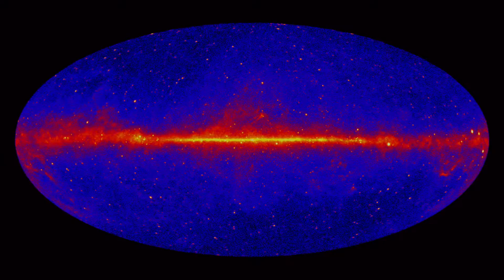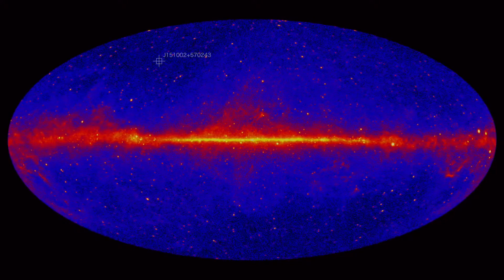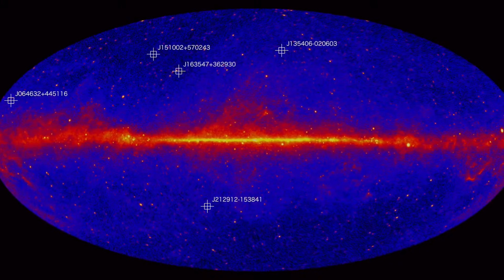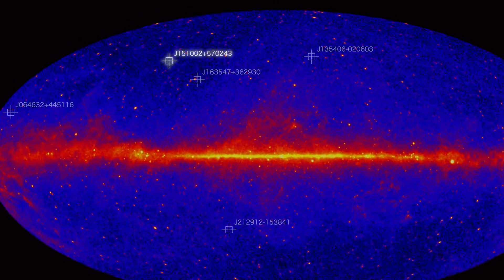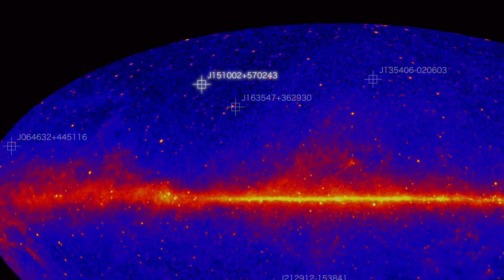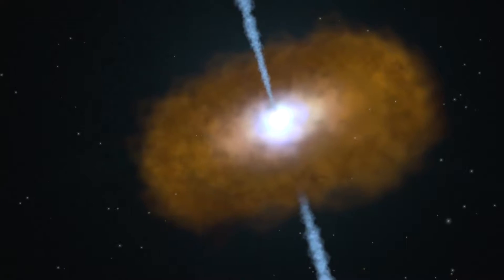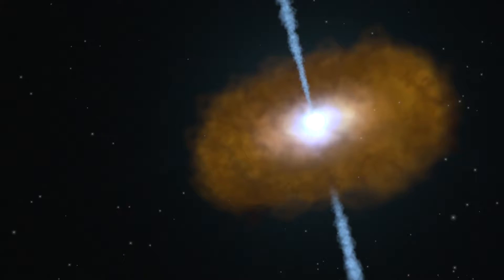Now Fermi team members have identified five of the most distant gamma ray blazars known. The record holder emitted its light when the universe was just one-tenth its current age. That object hosts a black hole with a mass of about three billion suns. That's 750 times bigger than the black hole at the heart of our own galaxy.